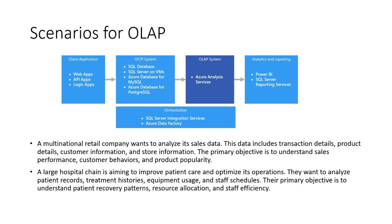Then comes data modeling in Azure Analysis Services. We'll apply hierarchies: time hierarchy — year, quarter, month, and day; product hierarchy — category, subcategory, product name; location hierarchy — country, state, city, and store. We're abstracting a layer over the data where non-technical people can easily explore it. We can also define measures like total sales, average sale, total profit, and number of transactions, as well as relationships between tables — like connecting transaction data to product data using product ID, allowing us to see which products have the highest sales.